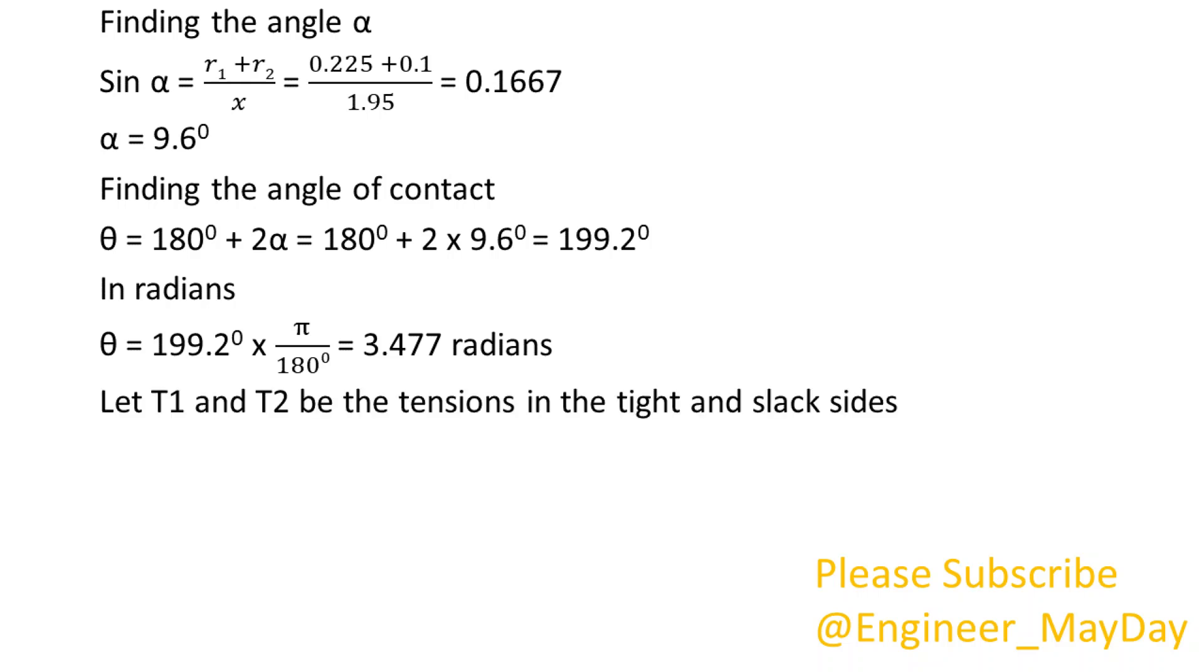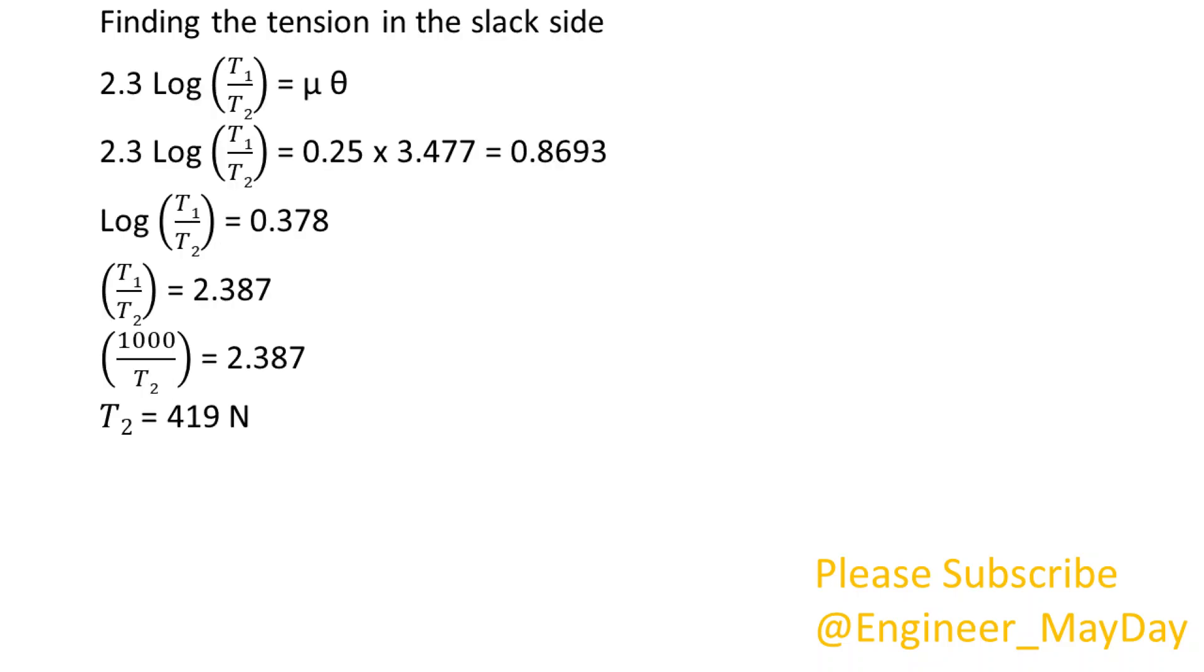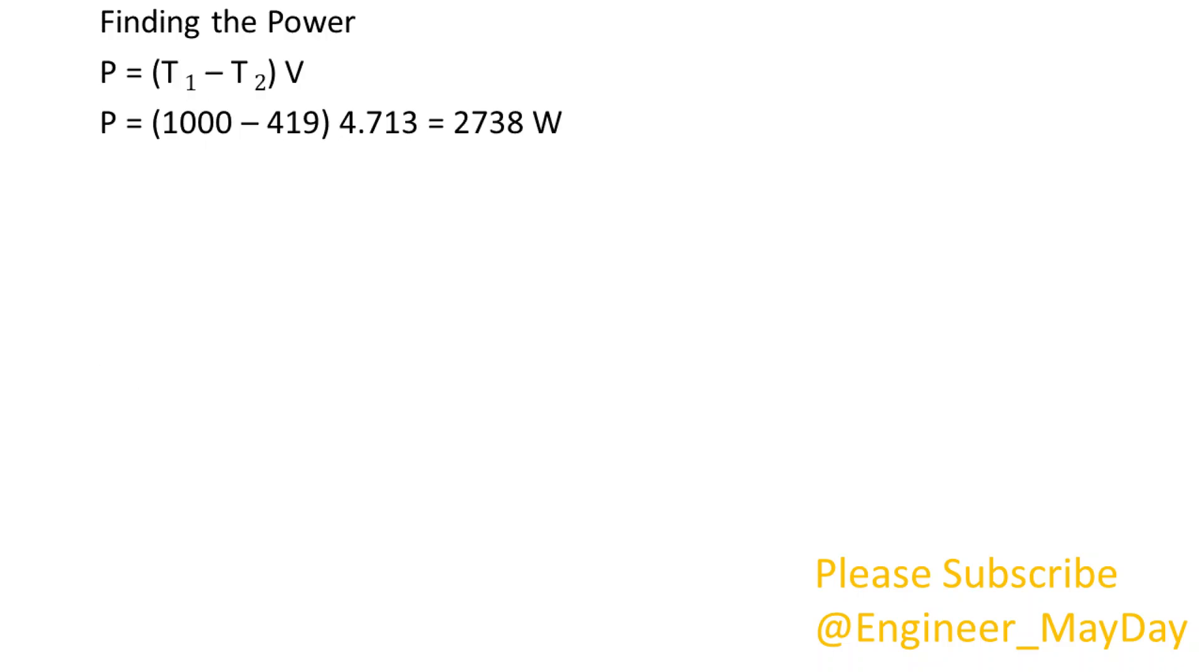Let T1 and T2 be the tensions in the tight and slack sides. Finding the tension in the slack side, T2 is equal to 419 newtons. Finding the velocity, V equals 4.713 meters per second. Finding the power, P equals 2738 watts.